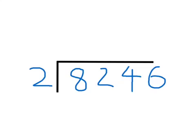Here's another example. So again, my divisor is 2. My dividend is 8,246. I would read this as 2 into 8,246.